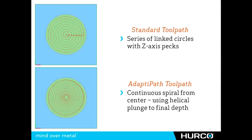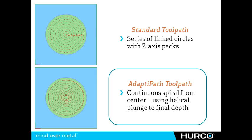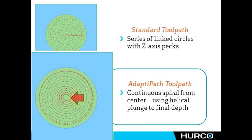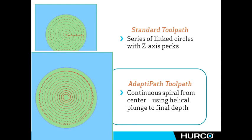Even on a simple toolpath like this, that means we have to slow our speeds and feeds, use coolant, and reduce our peck levels. But using Adaptive Path, as shown in the bottom picture, even on this circle it's going to be a continuous spiral starting at the center and continually spiraling outward. That ensures we never engage that extra amount of material like we see in the step overs in the top picture.